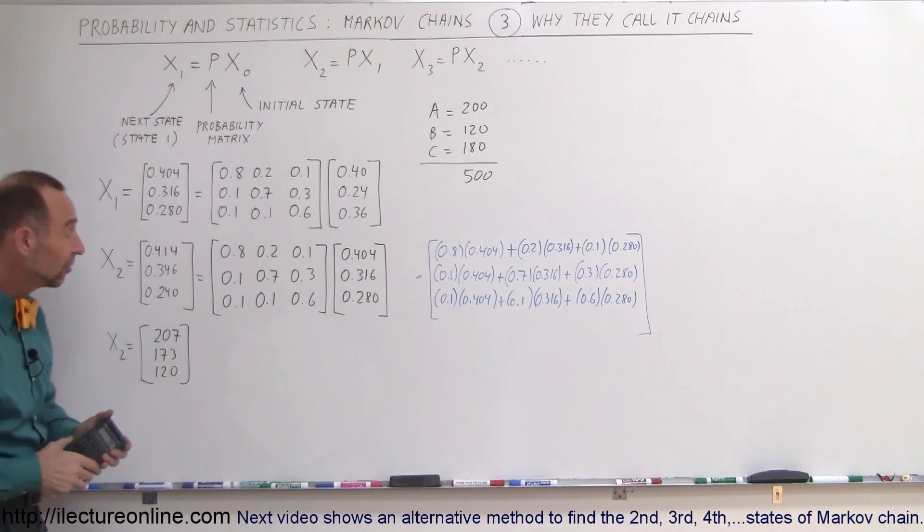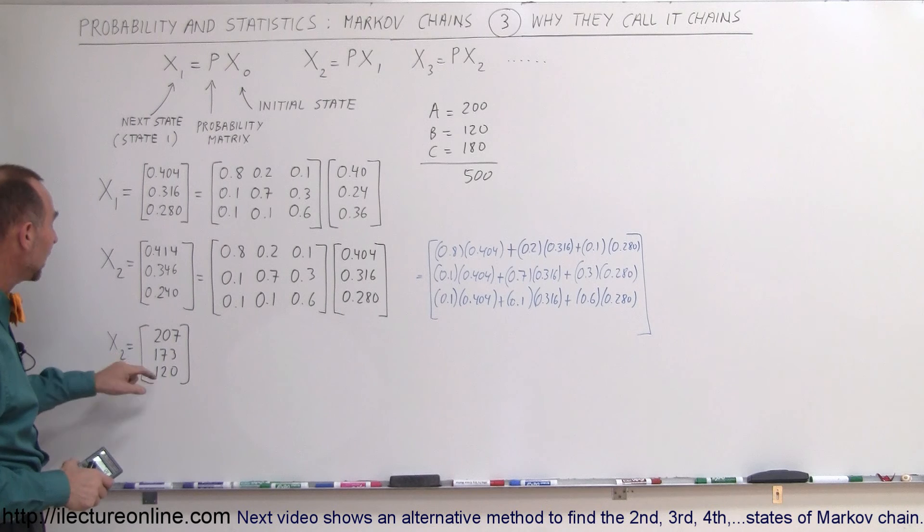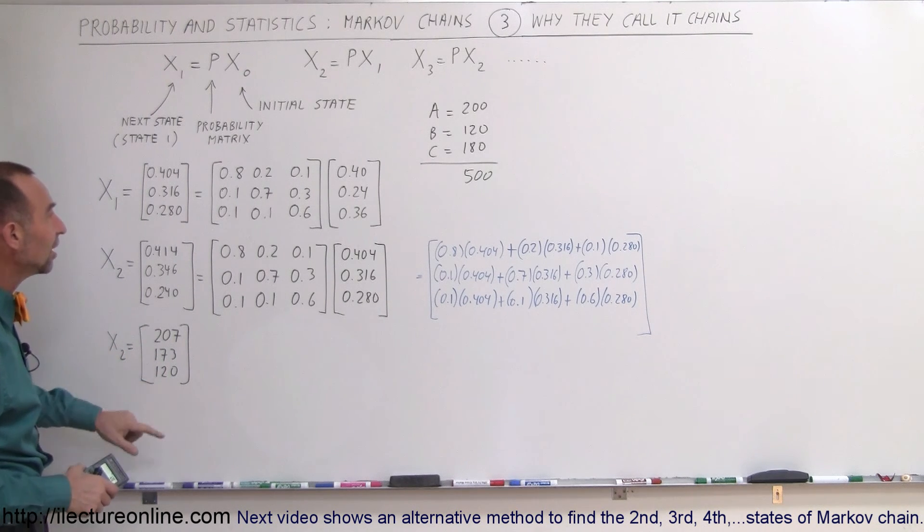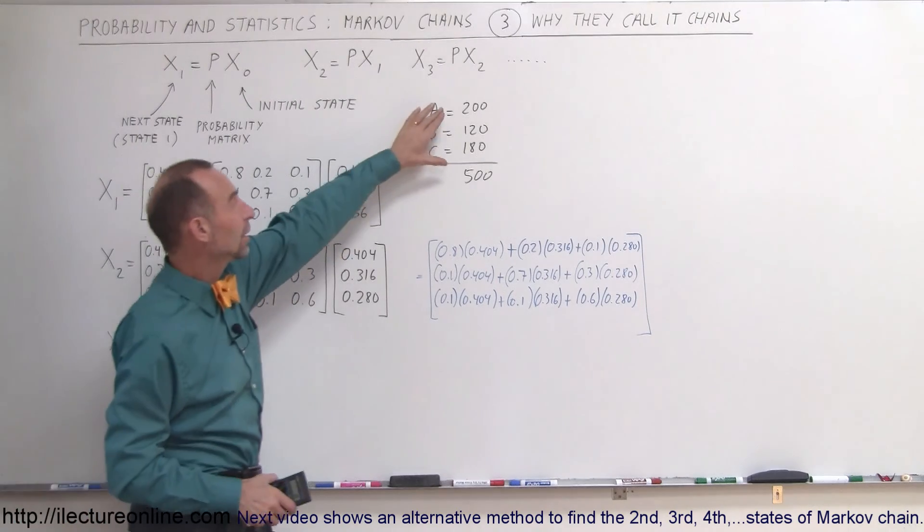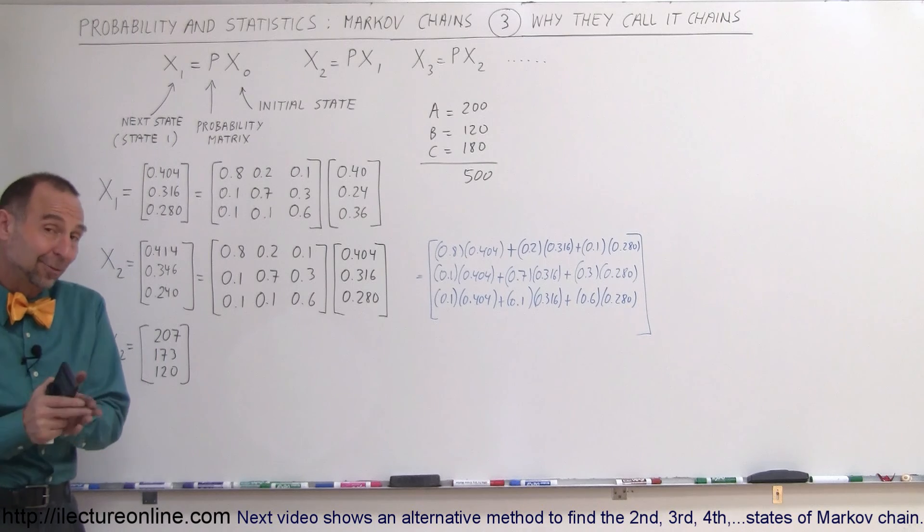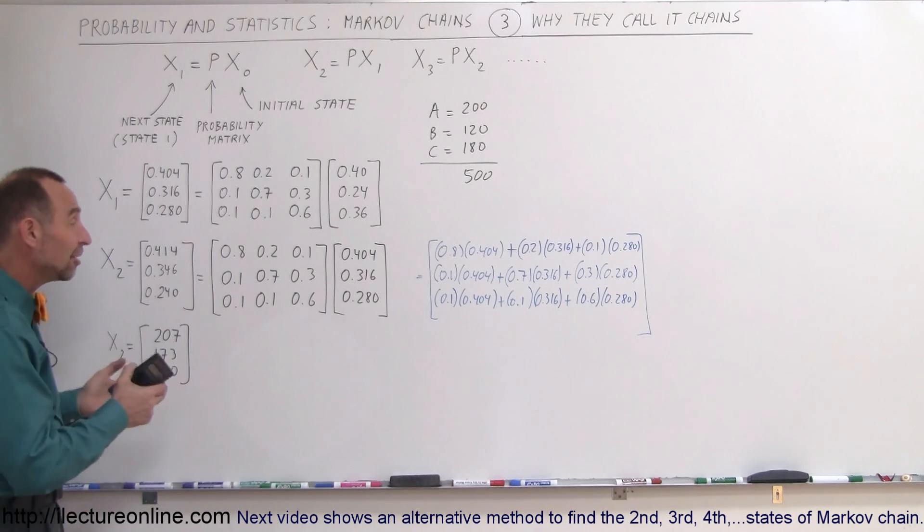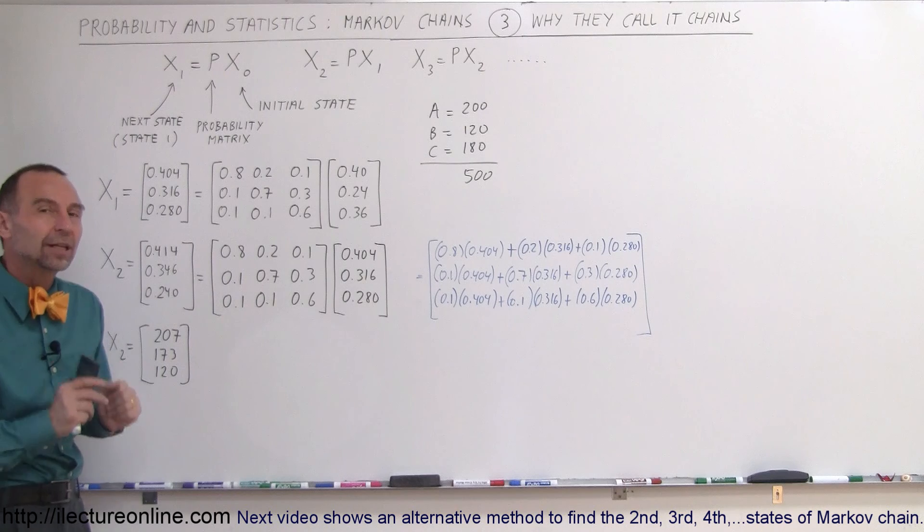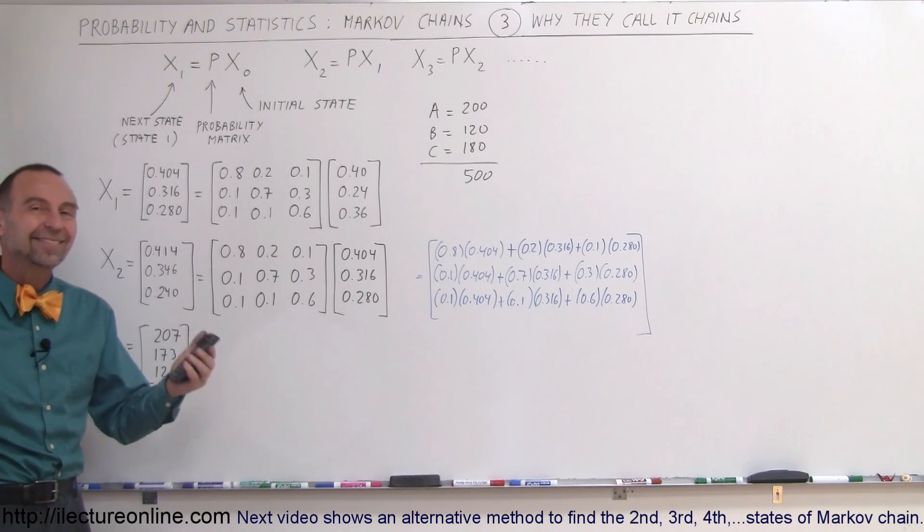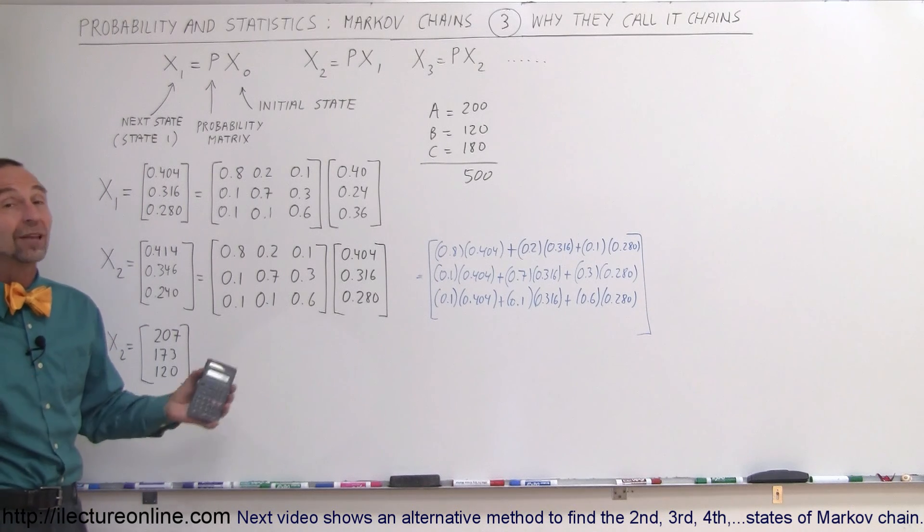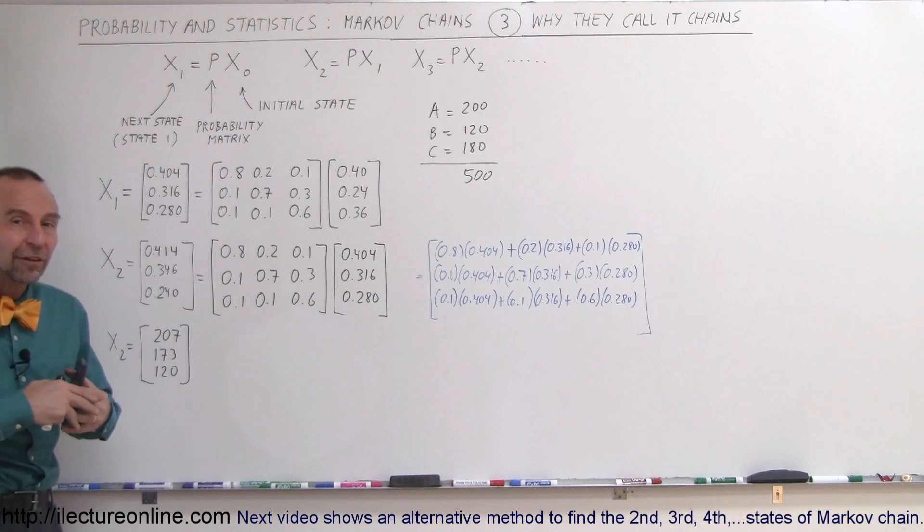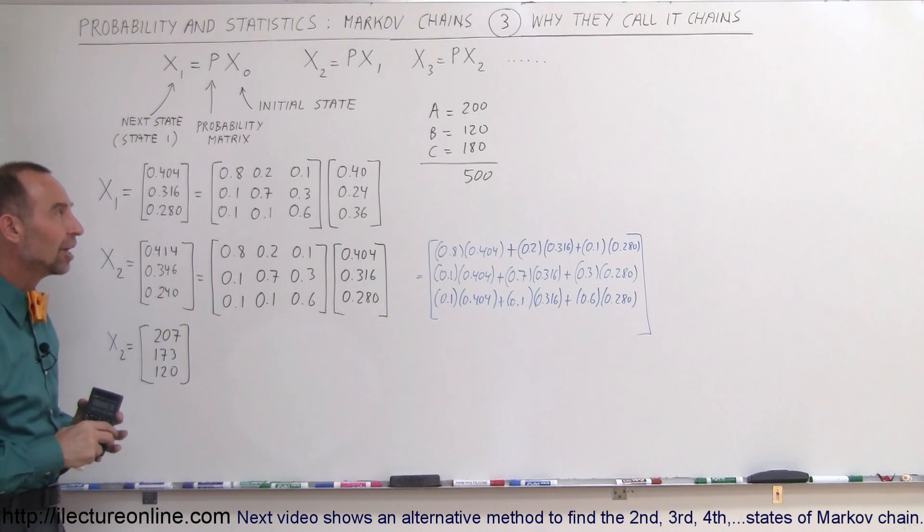So after two weeks, we can see that 207 people will be shopping at store A, 173 at store B, 120 at store C, compared to where they started two weeks earlier. And of course, we can continue doing this time and time again. That's why we call it Markov Chains. Eventually, you will find that this typically will converge to a particular number. It will come to a certain number of customers in each store and stay at that number. That's what typically happens in business, in nature, in science. These things will eventually converge if the probability matrix does not change.